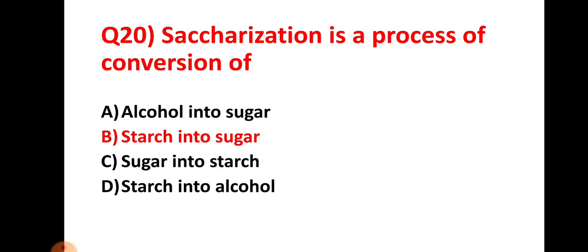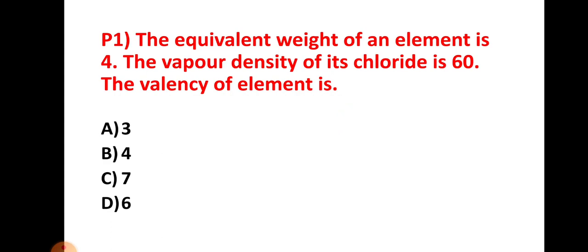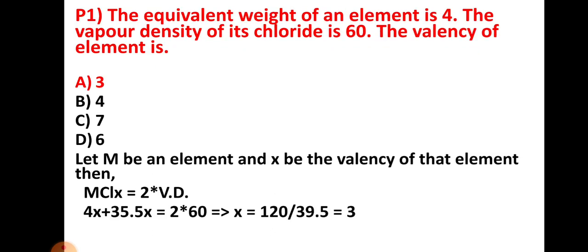Practice question one: the equivalent weight of an element is 4, and the vapor density of its chloride is 60 — find the valency of the element. Try this yourself and comment your answer. The right answer for this question is 3.